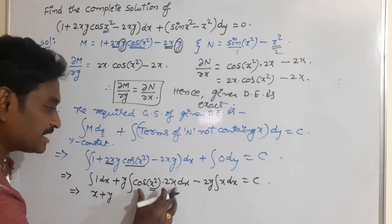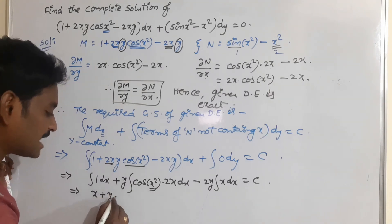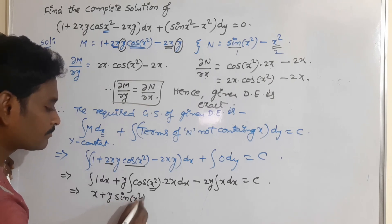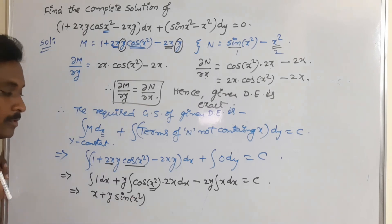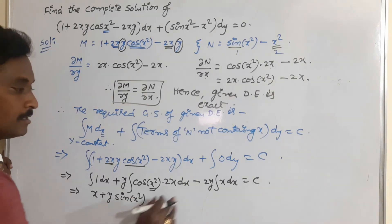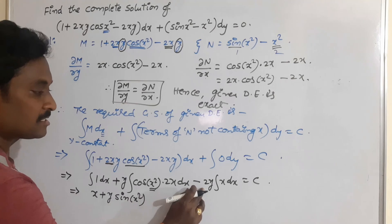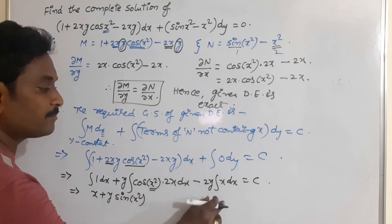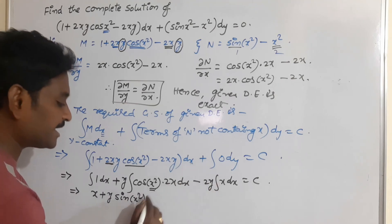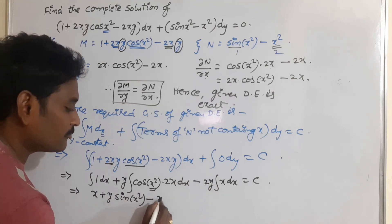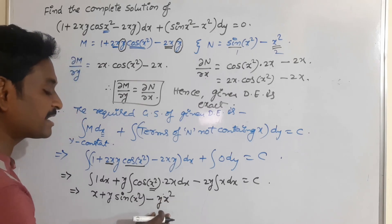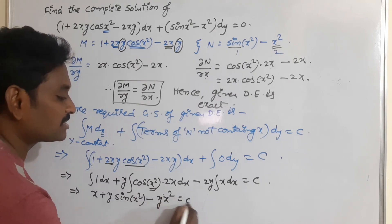What is the integration of cos t? Sin t. So directly I will write the integration of this part as y·sin(x²). Minus 2y into — what is the integration of x? x²/2. The 2s cancel, so you will get only y·x². You can write it as x²y as you wish.